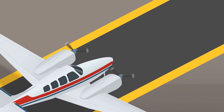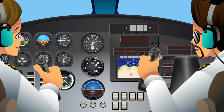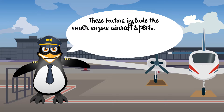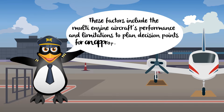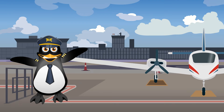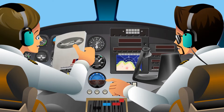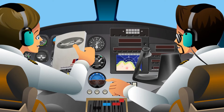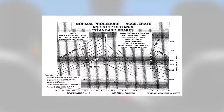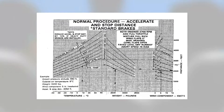Pilots of multi-engine aircraft must consider various factors to make the best decision should an engine fail during takeoff. These factors include the multi-engine aircraft's performance and limitations to plan decision points for an appropriate course of action. Multi-engine aircraft have performance charts located in the airplane flight manuals or pilots operating handbooks.